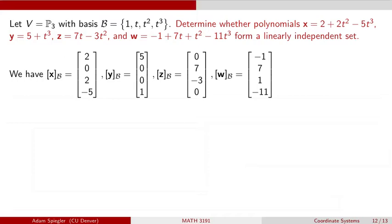So from this basis, we can find B coordinates for each of these polynomials X, Y, Z, and W by pulling off the coefficients from each of these polynomials. So X was 2 plus 2T squared minus 5T cubed. So the 2 was the constant term. We had 0 for the linear term. We have a 2 for the quadratic coefficient. And minus 5 is the coefficient in front of T cubed.